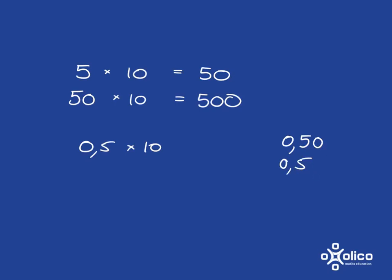So popping a zero on the end doesn't work very nicely when you get to decimals. And so what we said is instead what we're going to do to change the place value is move the decimal comma over to the right to make the place value of the 5 bigger. And so you'd end up with 5 comma 0, which is just 5.